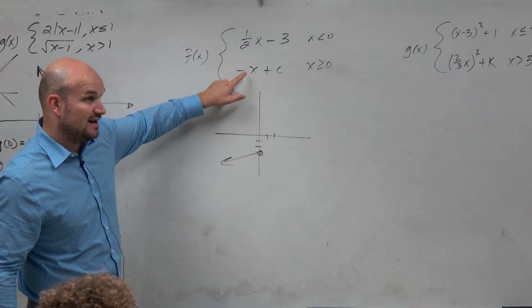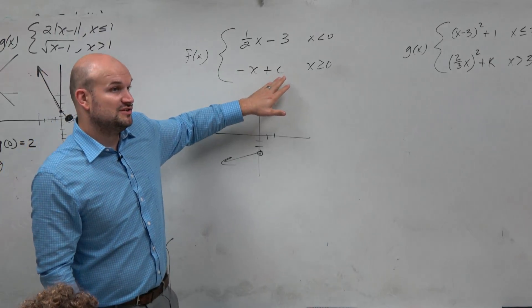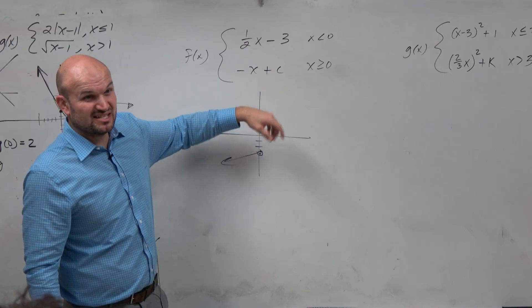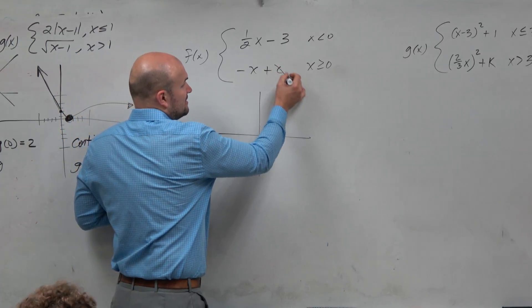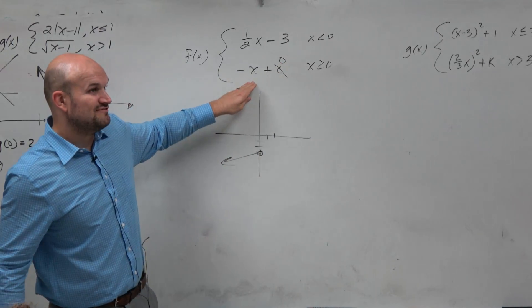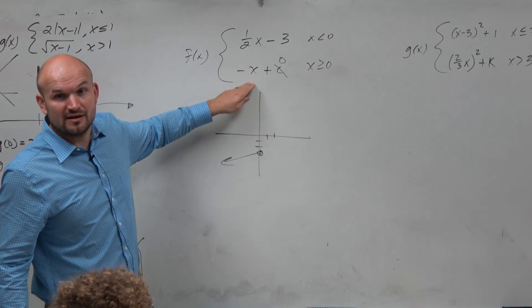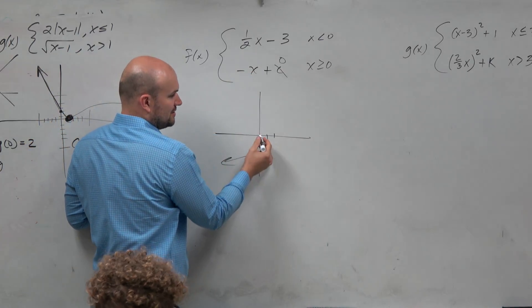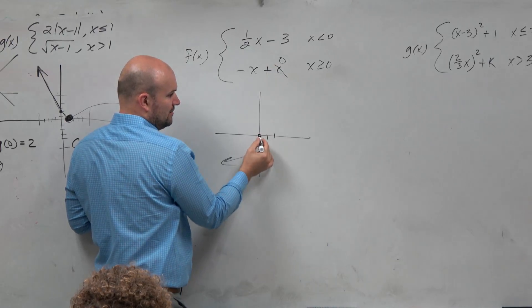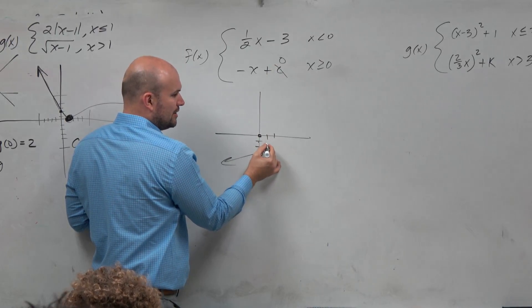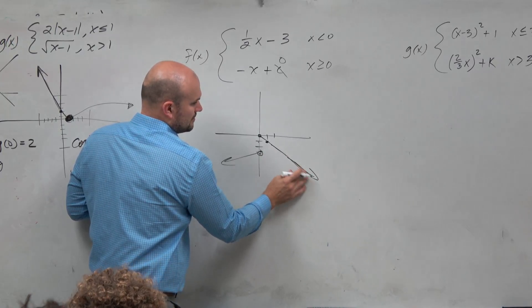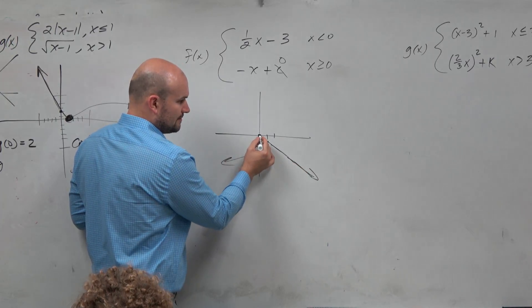Now the next one is we have negative x. Now we need to find the value c. I'm not really sure what c could be, so let me just pretend c is 0. Let's just graph negative x, y equals negative x for x values that are greater than 0. So if c was 0, then it'd go down 1 over 1, and the graph would look like this.